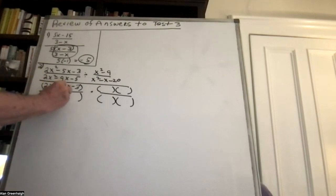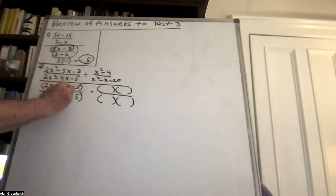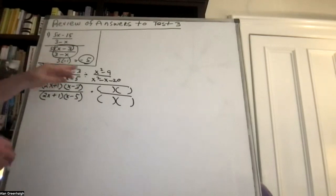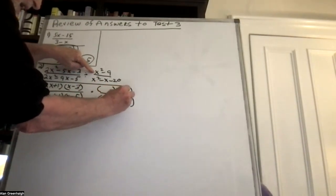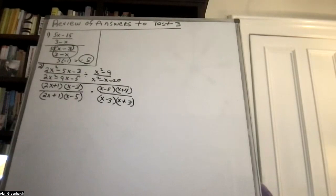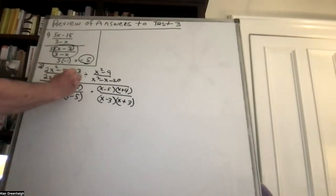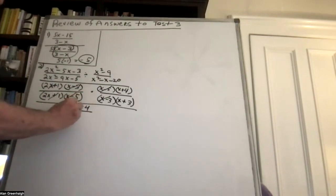Then here you get 2x and x. Very similar problem — 5 and 1, and this is a 10 but you want 9, so negative and positive. We're switching this around: x squared minus 9 is in the denominator giving x minus 3 and x plus 3, and the numerator gives x minus 5 and x plus 4. This all drops out, and that was the answer.